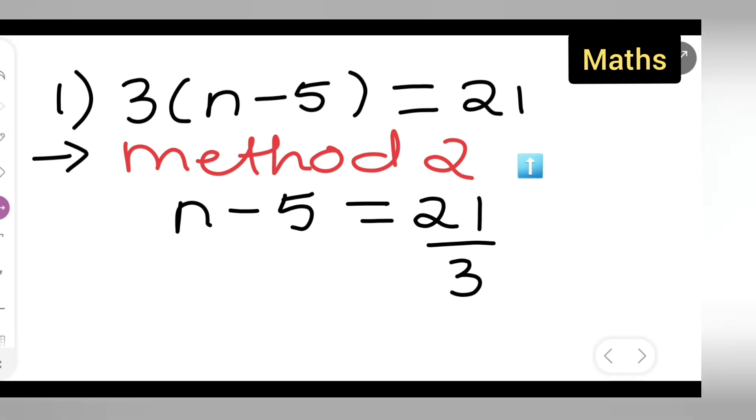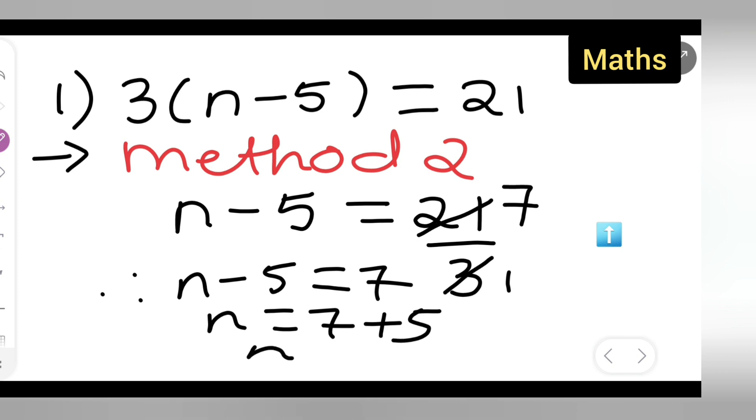So what I have done over here is I have taken this 3 down over here. So you can cancel it. 3 ones are 3, 7s are... So you will get therefore n minus 5 is equal to 7. So n is equal to 7 plus 5 will give you n is equal to 12.